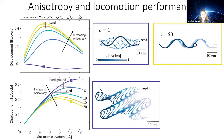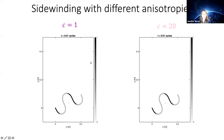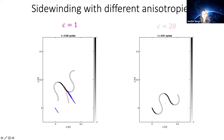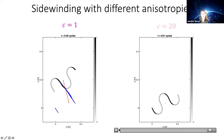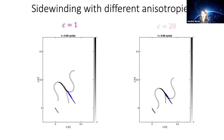Looking at the trajectories: for anisotropy equal to one, the simulation predicts substantial progression; for higher anisotropy, displacement is definitely less. Videos of the simulation confirm that at anisotropy equal to one the movement is effective, while turning it up to 20 results in what looks like more of a struggle, with much less displacement.